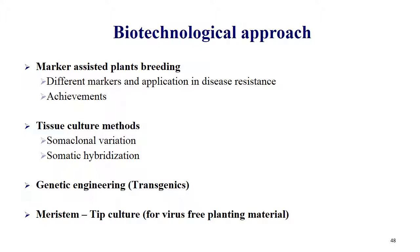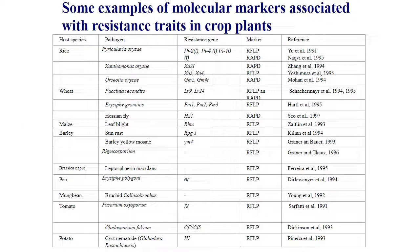Biotechnological approaches include marker-assisted selection, tissue culture methods like somaclonal variation, somatic hybridization, and meristem tip culture for virus-free planting materials. Examples of molecular markers associated with resistant traits: in rice for Pyricularia oryzae (blast), resistant genes are Pi2, Pita, Pis. For Xanthomonas oryzae: XA21, XA3, XA4, XA5, XA13. For Orseolia oryzae (gall midge): GM2, GM40.